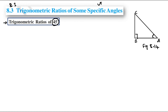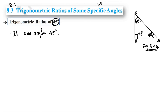For this, in a right angle triangle — figure 8.14 in your textbook — ABC is a right angle triangle where angle B is 90 degrees. If one angle is 45 degrees, the other angle will also become 45 degrees. So angle A is equal to angle C, and both are equal to 45 degrees.